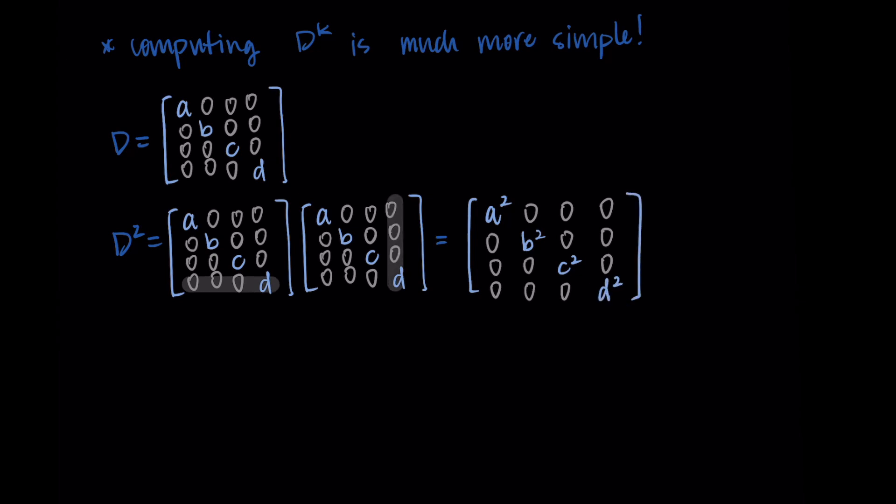Basically, multiplying these two matrices together is just like multiplying those diagonal elements. We do A squared, B squared, C squared, D squared. Having zeros everywhere else means that all of the other entries stay as zero.